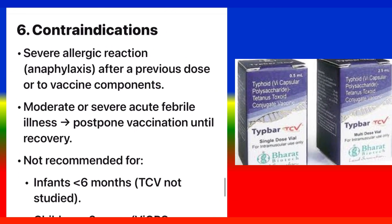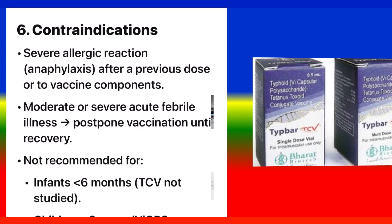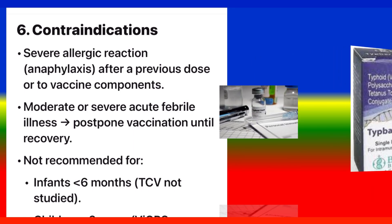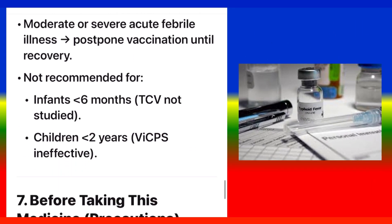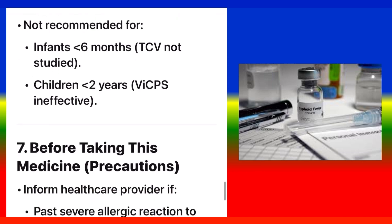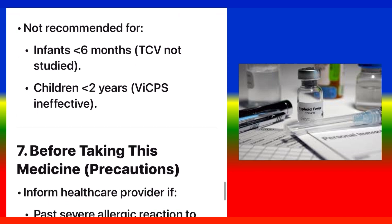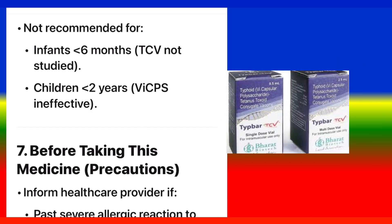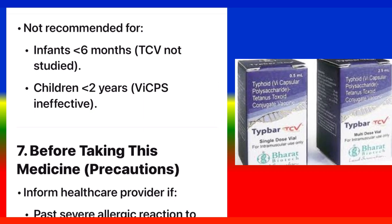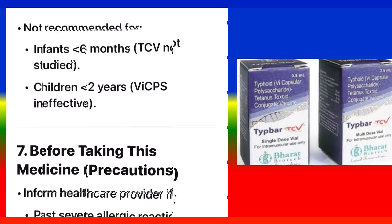Contraindications: Severe allergic reaction or anaphylaxis after a previous dose or to vaccine components. Moderate or severe acute febrile illness — postpone vaccination until recovery. Not recommended for infants under 6 months as TCV has not been studied in that age group. VICPS is contraindicated in children under 2 years as it is ineffective.